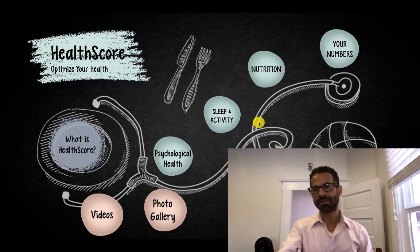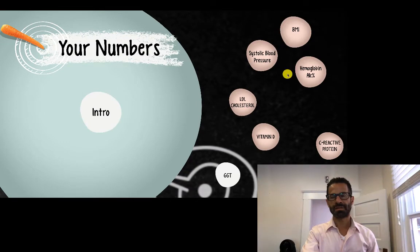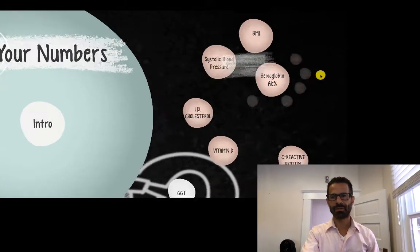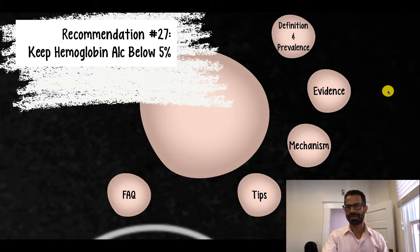Today we're focused in the section on your numbers and we're talking specifically about hemoglobin A1c. The recommendation is to keep your hemoglobin A1c below 5%. Let's take a closer look at what this means and how commonly this goal is achieved in the general population.